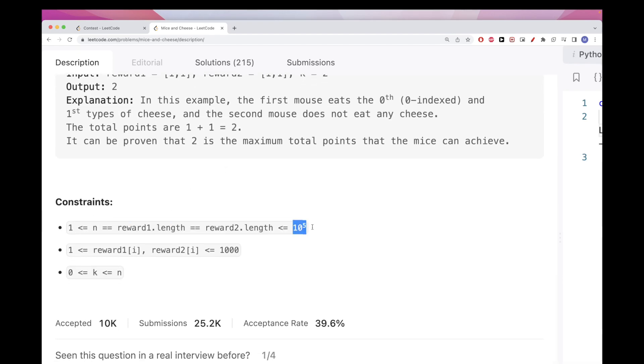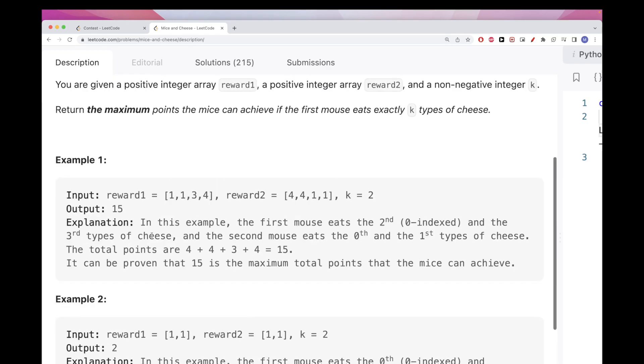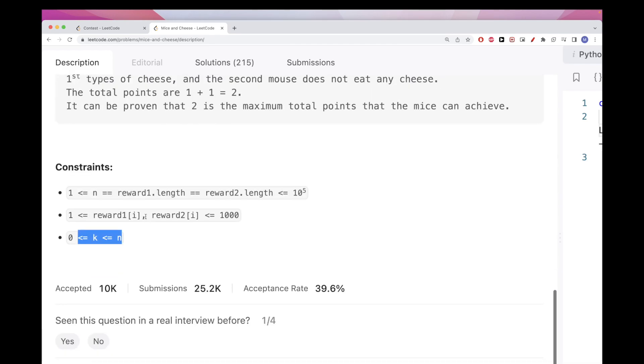Now, N can be really big, up to 10 to the power of 5, and K can be up to N as well. So those are the constraints. Now, how do we tackle this?